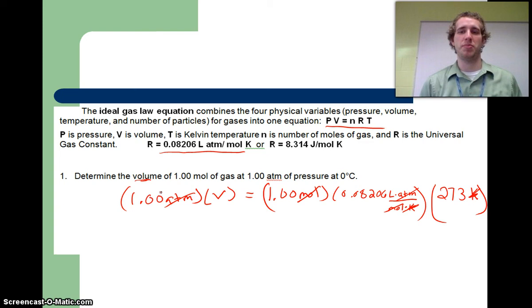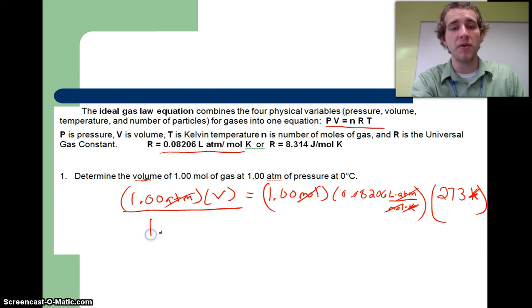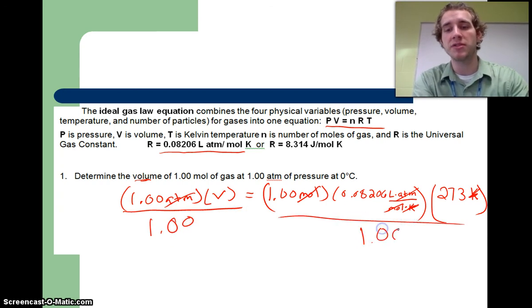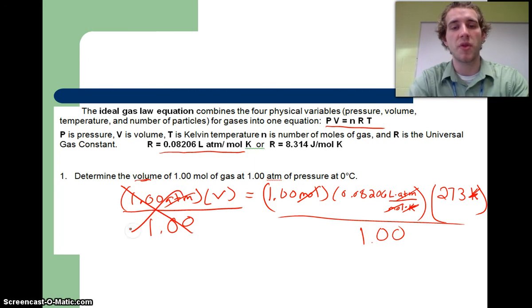Gotta love it when a plan comes together. Liters, that's what we're trying to solve for. So we got all these numbers, we're trying to solve for our variable. Right now it's being multiplied by this number 1.00. Get it by itself, we're gonna divide both sides by 1.00. Cancels from the left side.